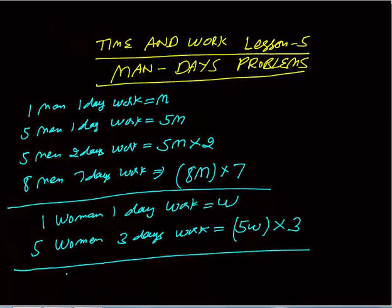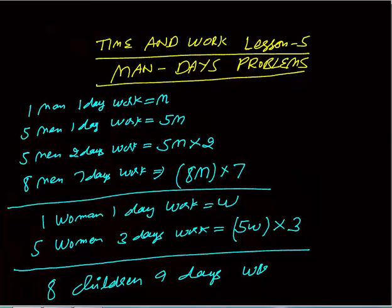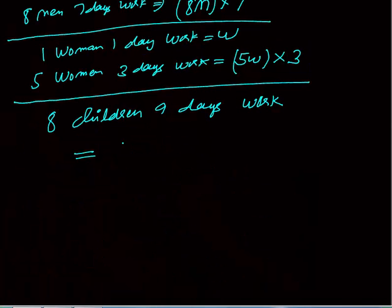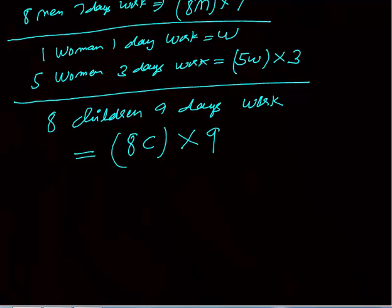Same way for a child — if I say eight children nine days work, I will assume that one child one day work is c. So eight children one day work is eight c, and in nine days they will do eight c into nine units of work.